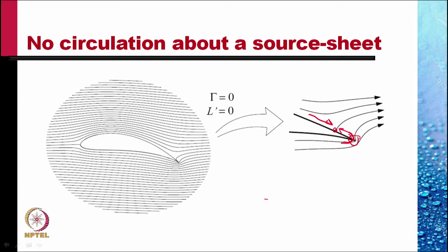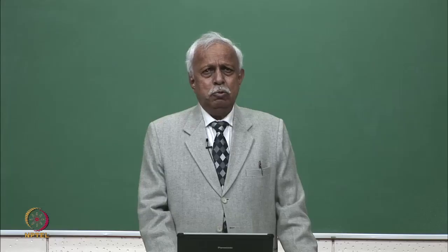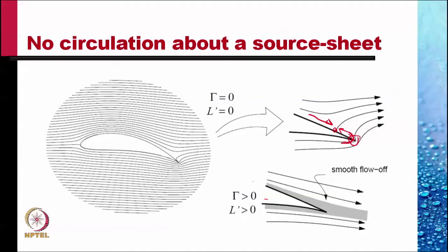A famous scientist by the name of Kutta produced a theorem which says that the actual flow has a circulation which is non-zero, which predicts a non-zero lift, and that circulation can be predicted.